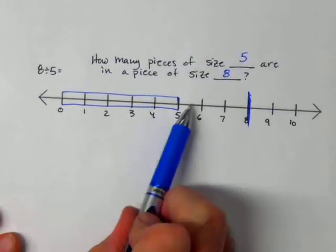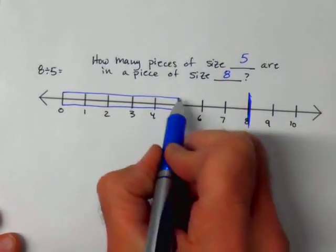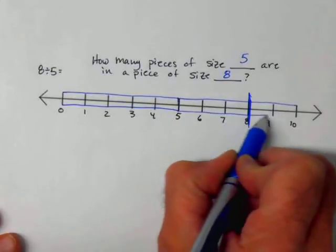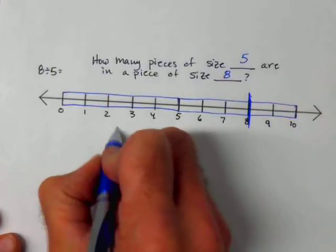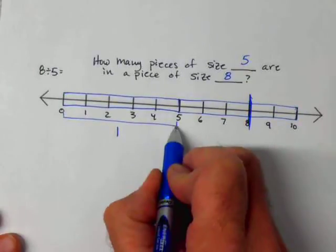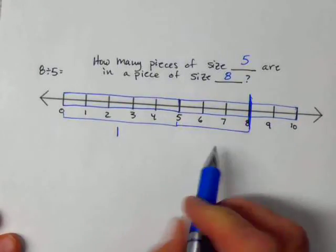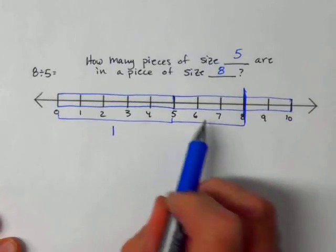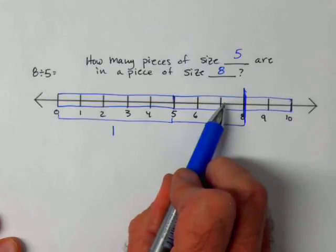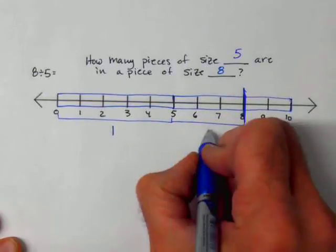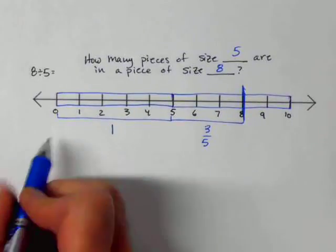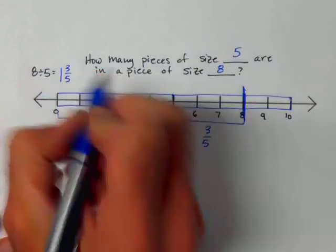Let's count another one: 1, 2, 3, 4, 5 — that goes past the 8. Let's figure out how we account for that. Well, there's one piece here. And then I have this piece right here — this is not a whole piece of 5. This is 1, 2, 3 out of the piece of size 5, so it's actually 3 fifths of a piece. So 8 divided by 5 is 1 and 3 fifths.